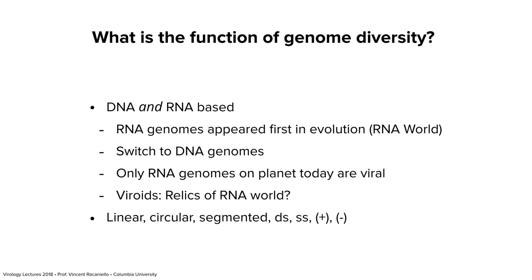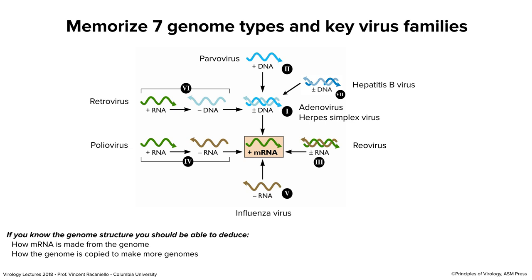You should really learn the seven genome types and the key virus families well. For example, if I say adenovirus, you should immediately think double-stranded DNA. Double-stranded DNA viruses — group one — will feature adenoviruses and herpes simplex viruses, and as I said earlier, all of you have herpes viruses of some kind in you. Single-stranded DNA viruses: parvoviruses — there are human pathogens and animal pathogens. If you have a dog or cat, you have to vaccinate them against parvoviruses or they could die. Gapped double-stranded DNA: hepatitis B virus is one example.